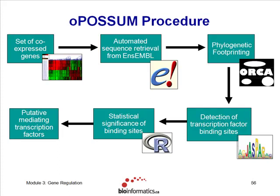It makes an alignment of those sequences using the ORCA aligner. It uses the Jasper database to make predictions of transcription factor binding sites within those sequences. The Opossum system covers human and mouse, and CONFAC is also human and mouse. There's also a yeast tool, a worm tool, and the human and mouse tool. If you're in flies, you're out of luck.